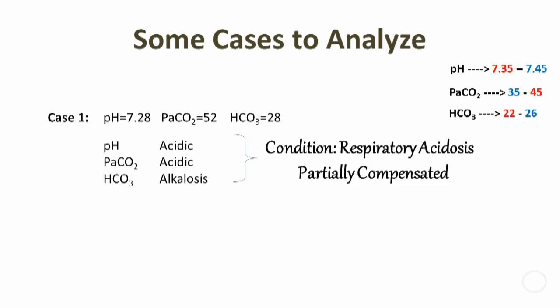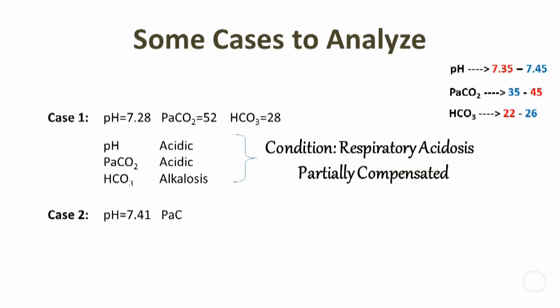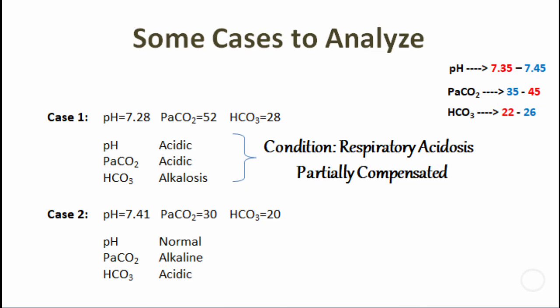Case number two: pH is 7.41, PaCO2 30, HCO3 20. pH is normal here but still on the alkaline side. PaCO2 is alkaline, HCO3 is acidic, which means PaCO2 and HCO3 are opposite each other. That is, lungs and kidneys are compensating each other to keep the pH normal.